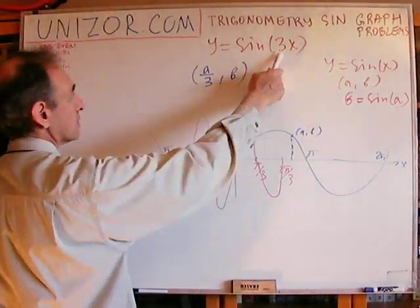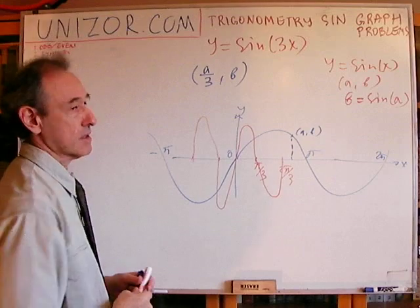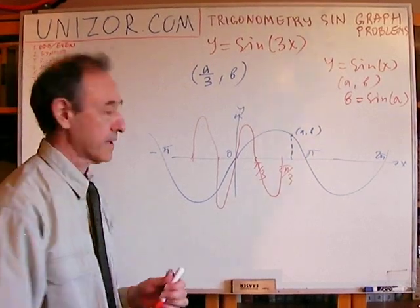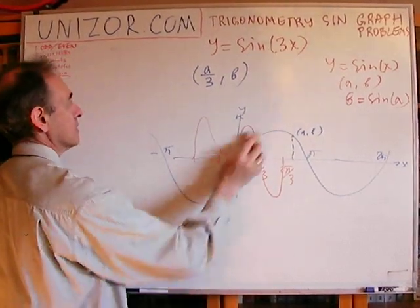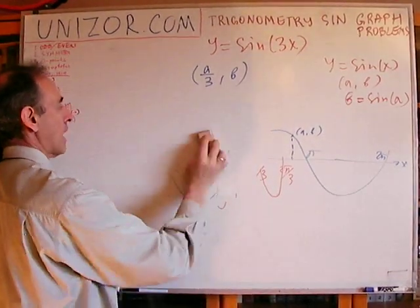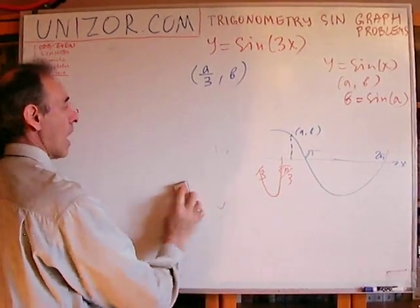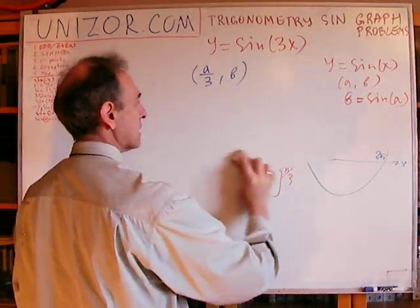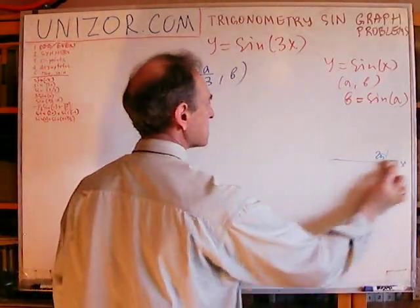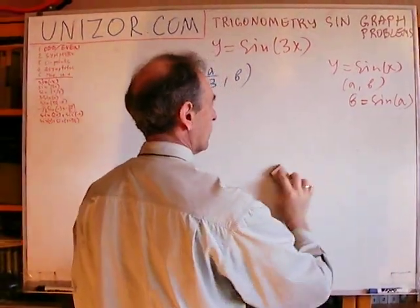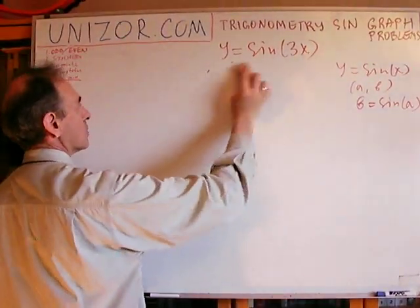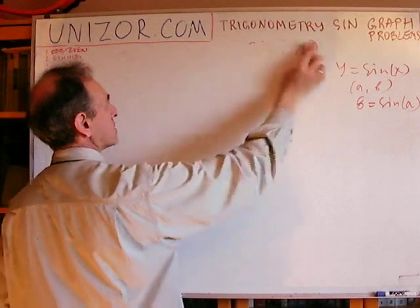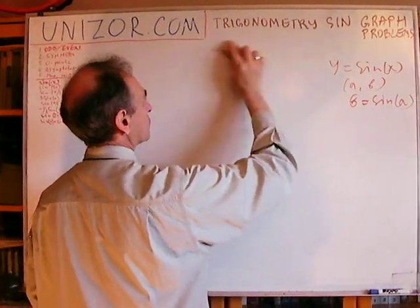So whenever you multiply the argument by three, the whole graph is horizontally squeezed toward the origin by the same ratio of three.